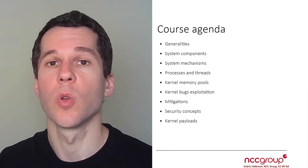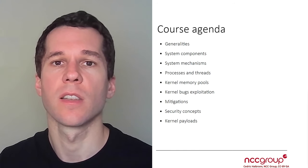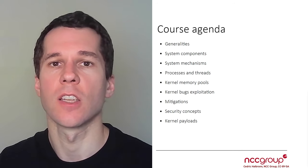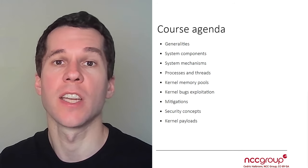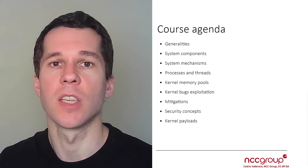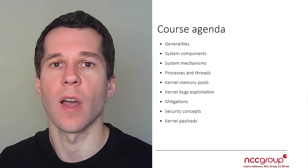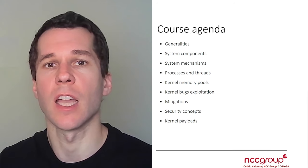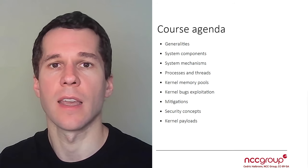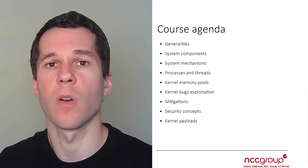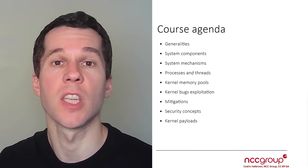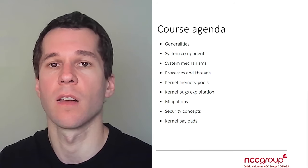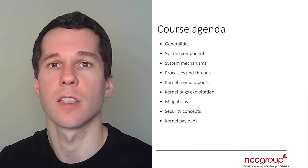Then we are going to look at different mitigations that have been added into the Windows kernel over time, such as avoiding that the null page is mapped, implementing mitigations like NX or ASLR to reduce the likelihood of vulnerabilities being exploited, or others like SMAP. We are also going to talk about some mitigations that are actually not implemented into the Windows kernel yet, such as SMAP.